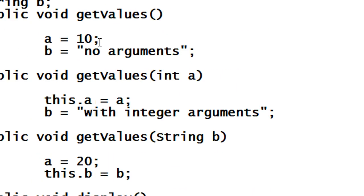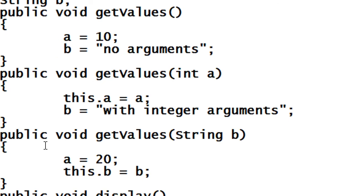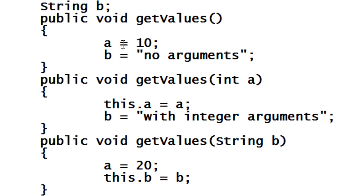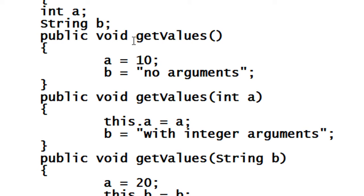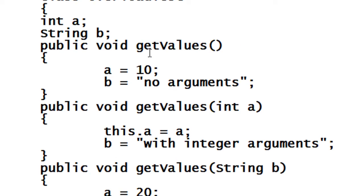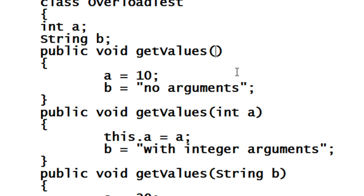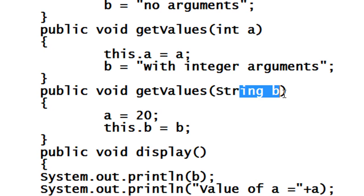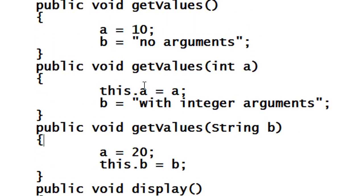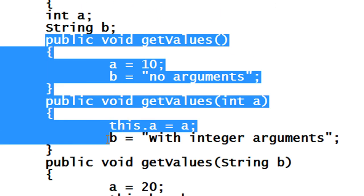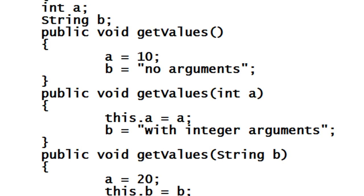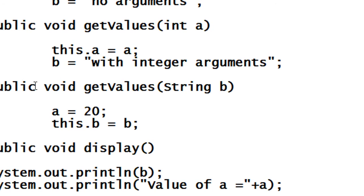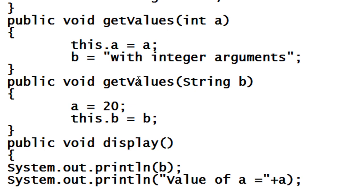So this is a simple example that demonstrates how to obtain method overloading in Java. Method overloading is simply calling a method with the same name but different arguments. Here the method getValues has three definitions with different arguments — no argument, integer argument, and string argument — and the compiler checks for the matching definition and executes only that one. Please subscribe to my channel for further video updates. Thank you for watching, see you in the next part of this tutorial.